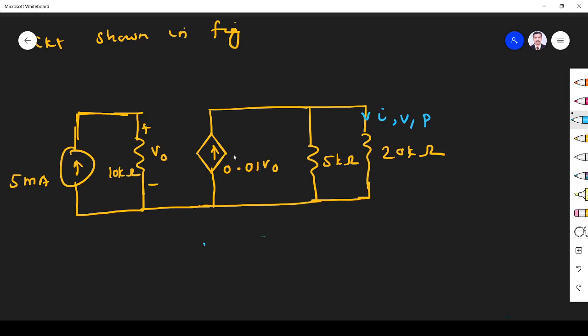So first we find what is V0. From that only we can find everything. Because the source is here. Dependent source is here. So first V0. V0 is equal to this is I. I into 10k. So I is 5 milliampere, I into 10 power minus 3. I into R, 10k, 10 into 10 power 3. So it is 50 volt.